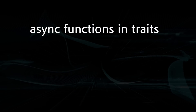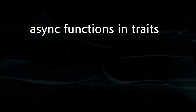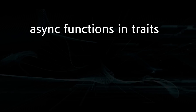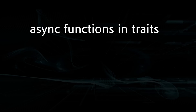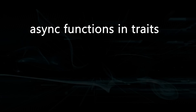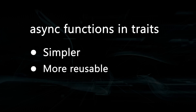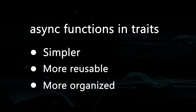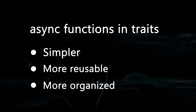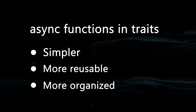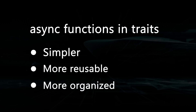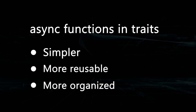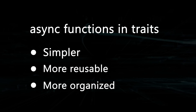Async functions in traits have been wanted for a long time because it would provide a consistent and flexible way to define shared async behavior, leading to simpler, more reusable, and more organized code. However, this feature was delayed due to its dependency on other features, such as generic associated types, which were implemented in Rust version 1.65.